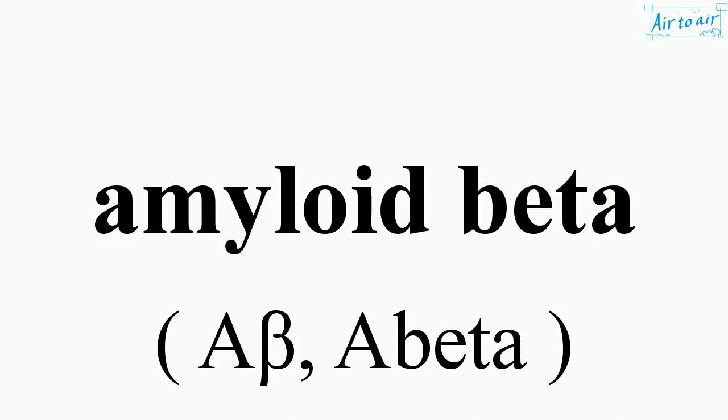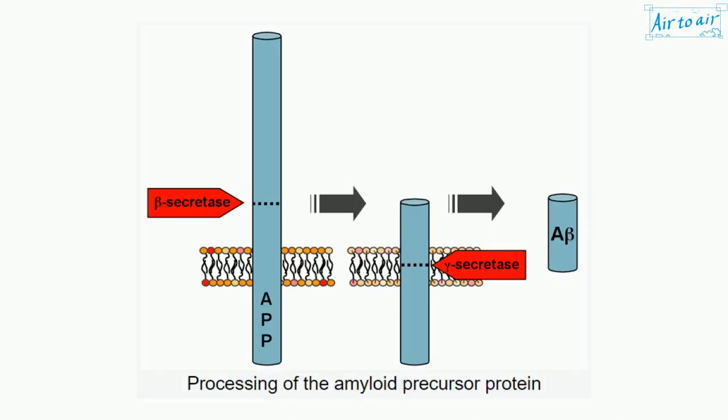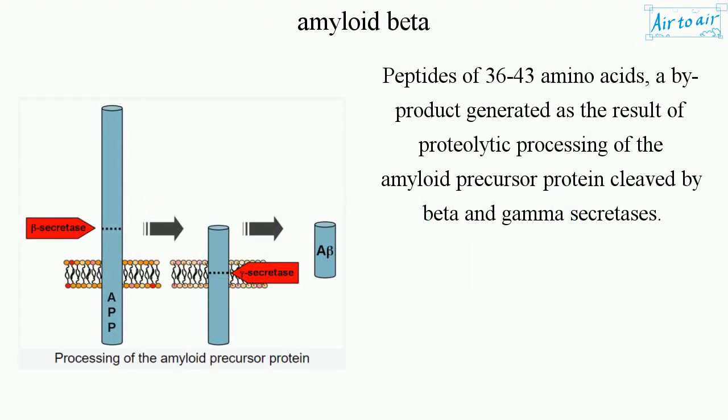Amyloid beta: peptides of 36 to 43 amino acids, a byproduct generated as the result of proteolytic processing of the amyloid precursor protein, cleaved by beta and gamma secretases.